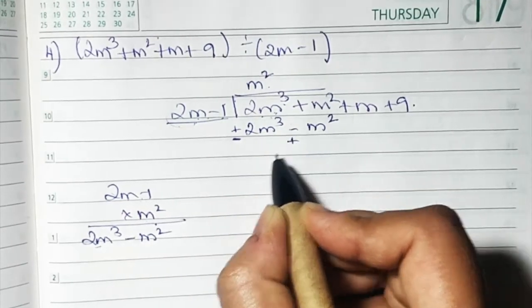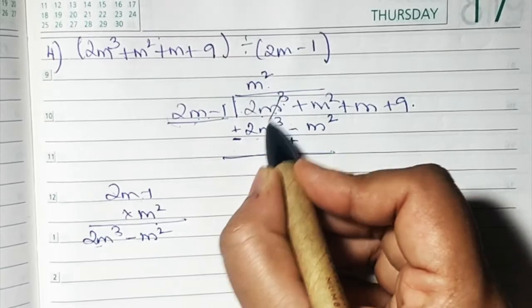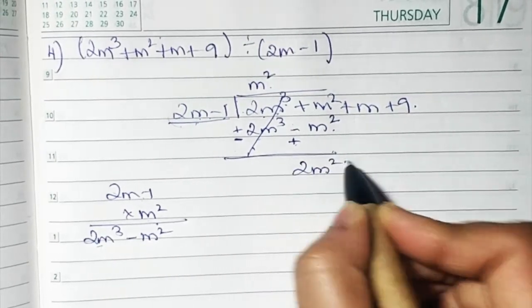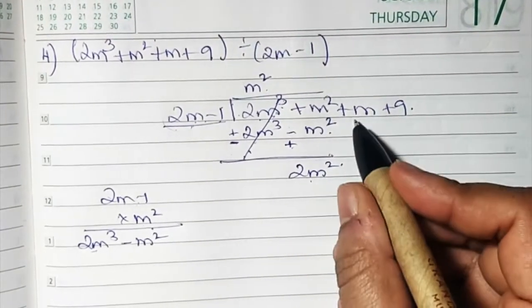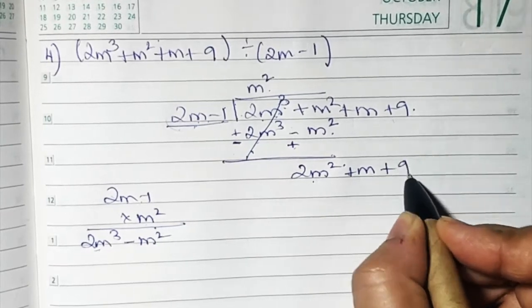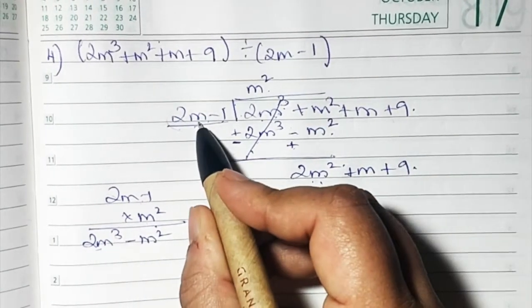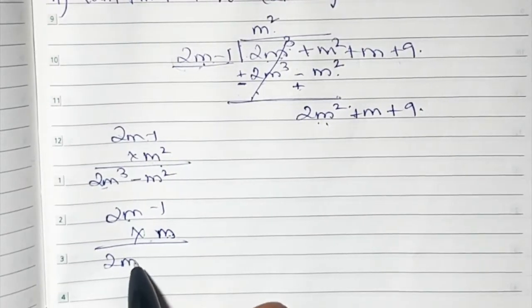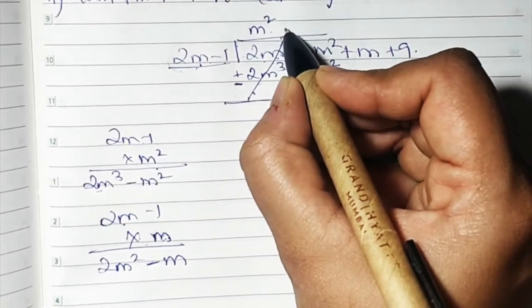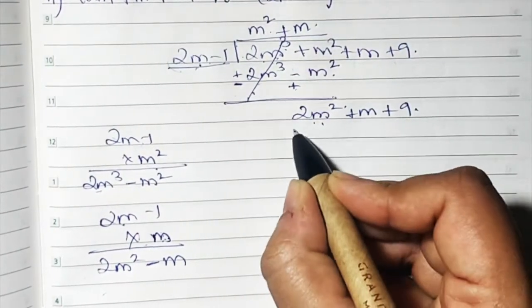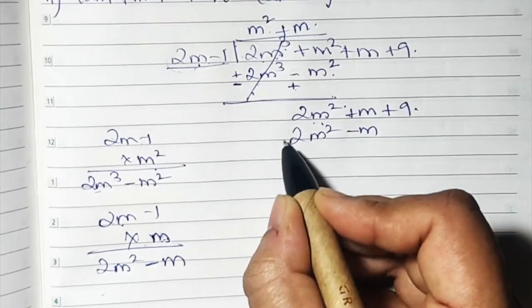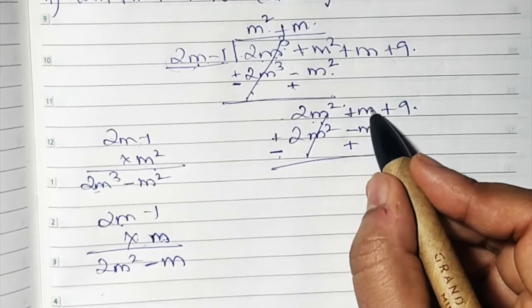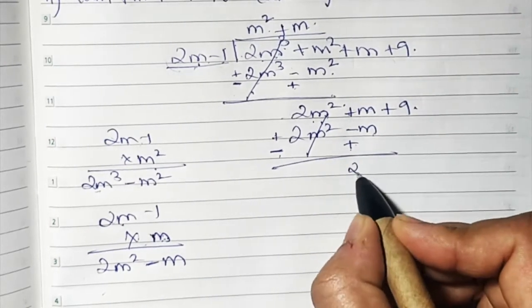We write m² in the quotient. So 2m - 1 × m² gives 2m³ - m². The signs change: minus and plus. 2m³ cancels; +m² + m² = +2m². Bring down m and 9. Now we have 2m² and only 1m in the divisor, so multiply 2m - 1 by m: 2m × m = 2m², and -1 × m = -m. Write m in the quotient.